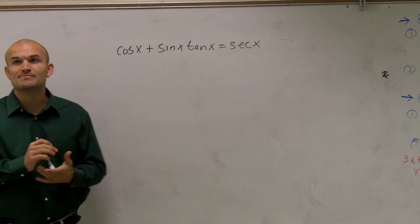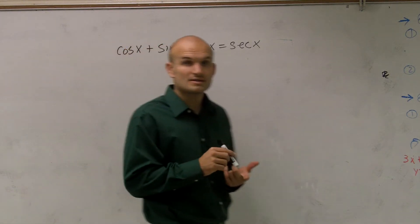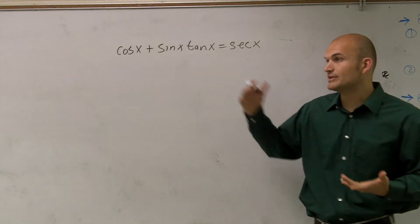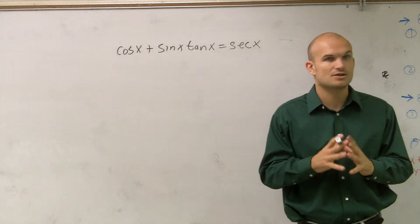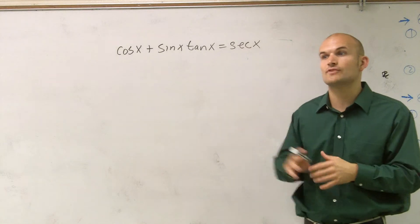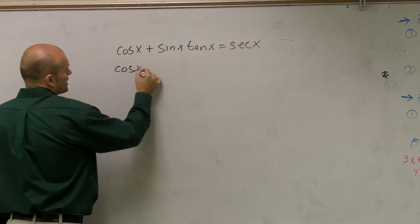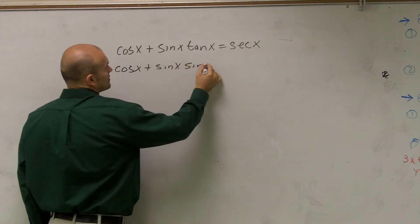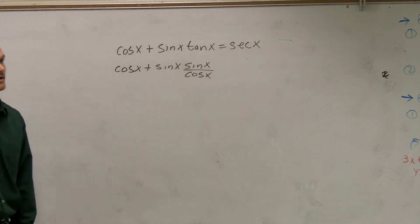So one thing I want to do is maybe let's see if I can simplify this. And the cardinal rule is, when you're trying to simplify things, you kind of get stuck, you don't know what to do next, you want to convert things to sines and cosines. It's a very good way when you get stuck, start converting things to sines and cosines. So this is cosine plus sine of x times sine of x over cosine of x.